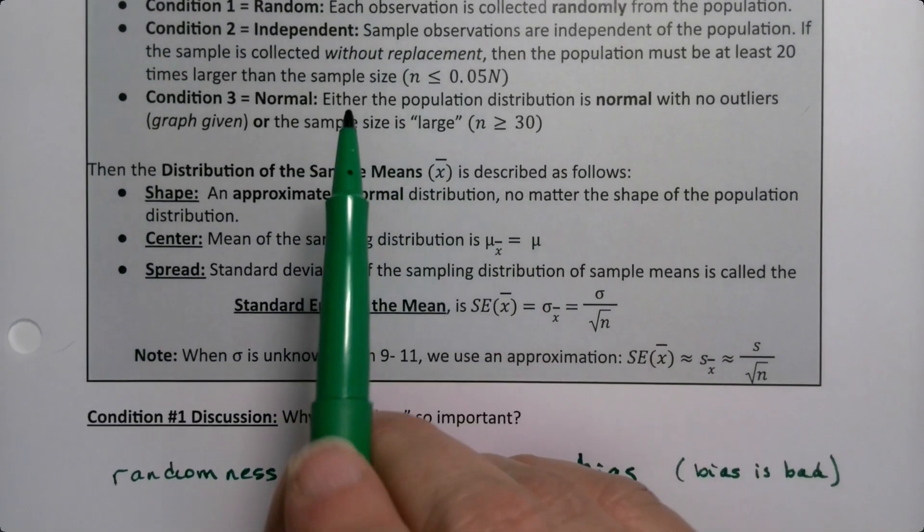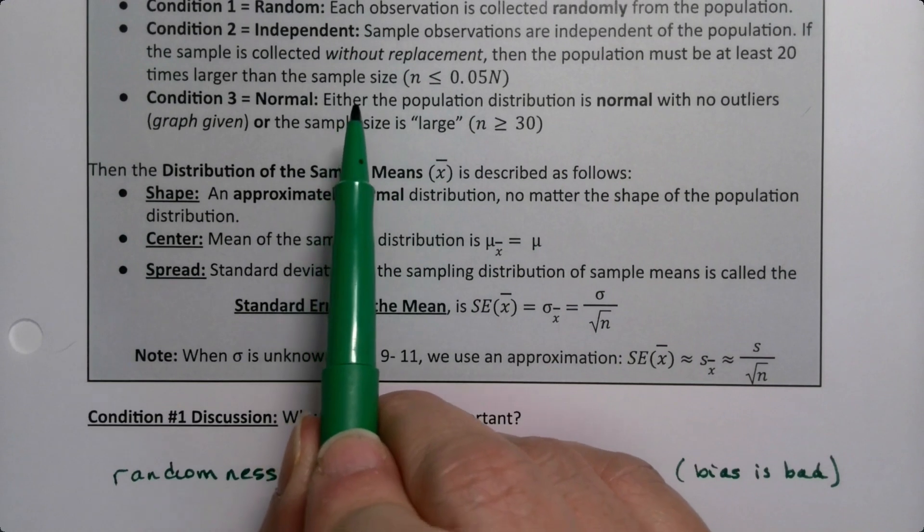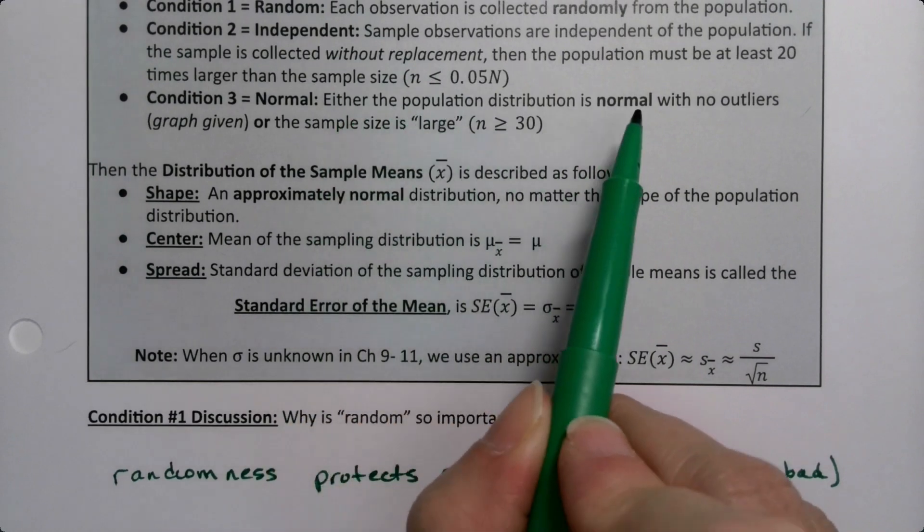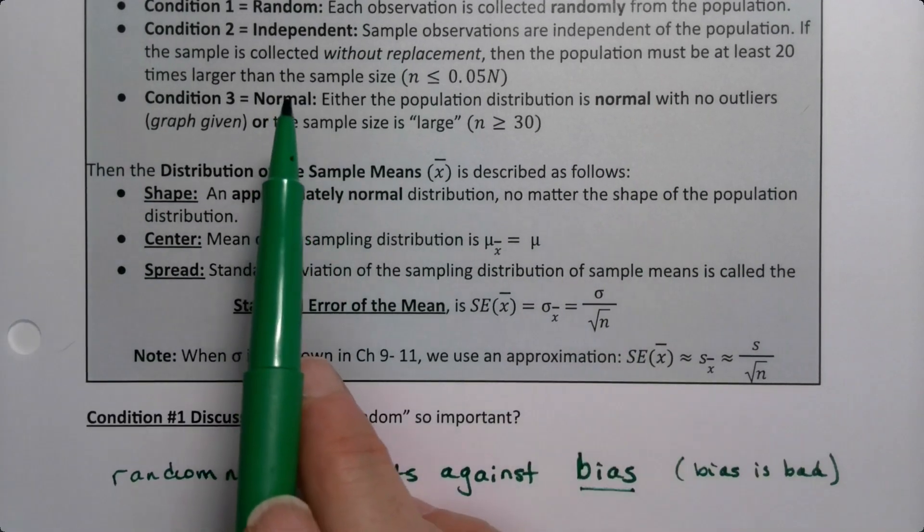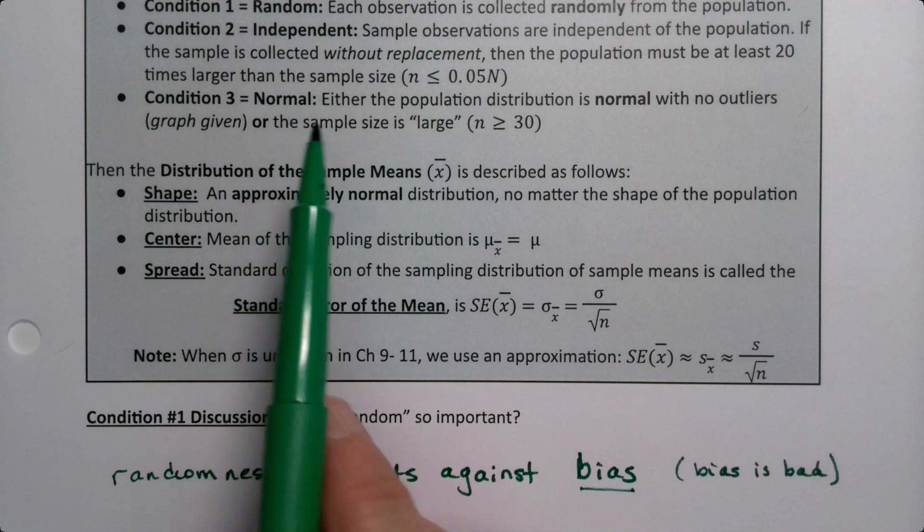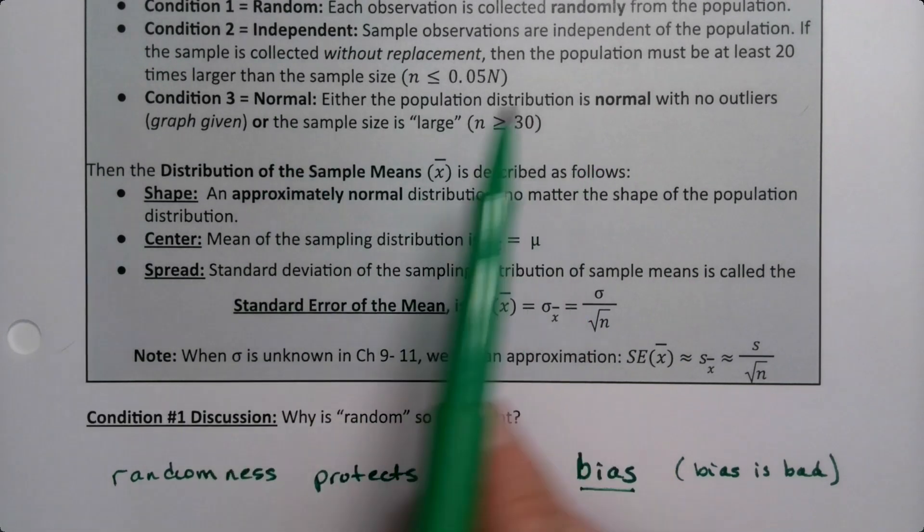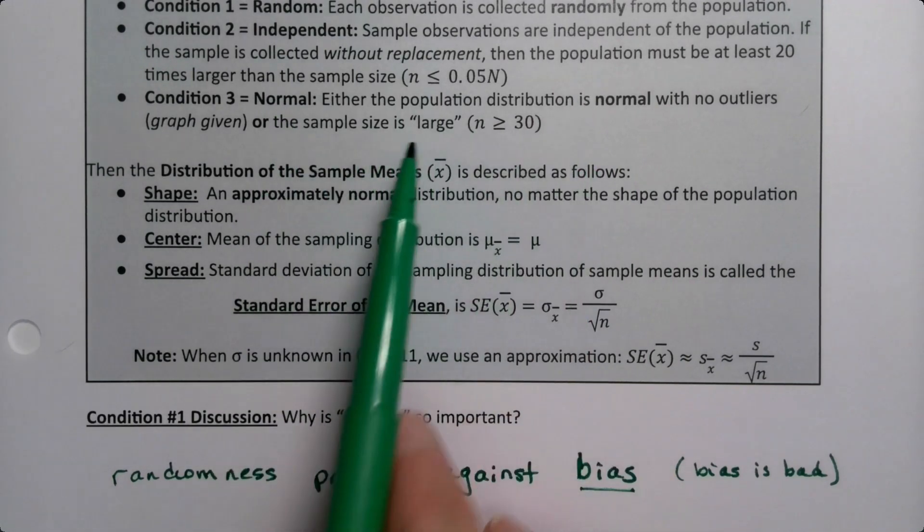So just read this over again real carefully. Either the population distribution is normal - so if the population distribution is normal, then you're good. Then the samples are normal and everything's fine. Sample distribution is normal. But if the sampling distribution is not normal, if it's skewed, then you want your sample size to be large.